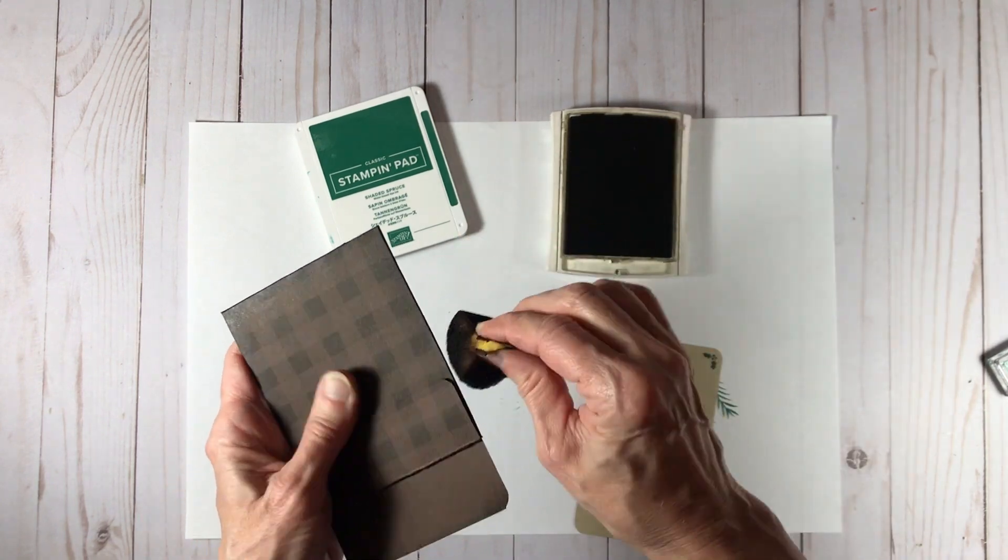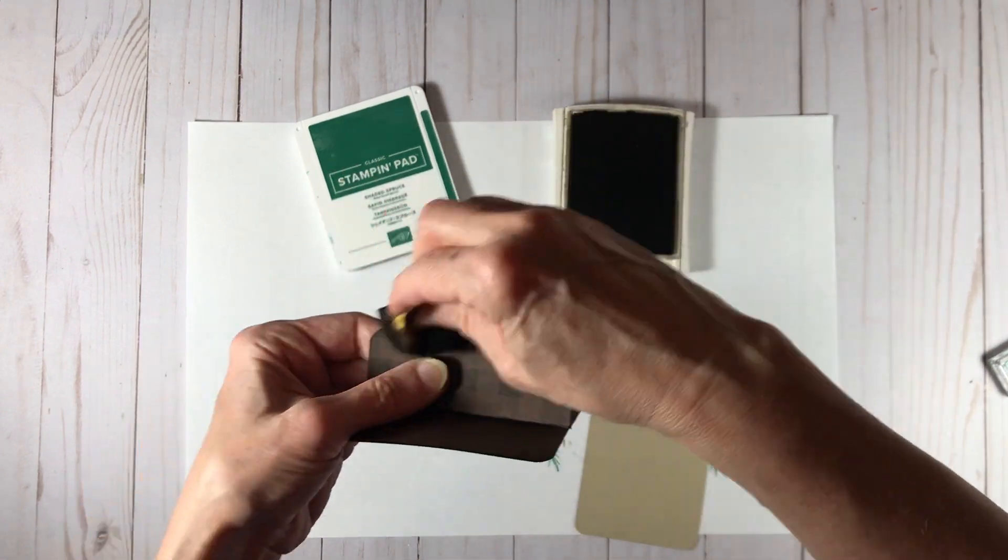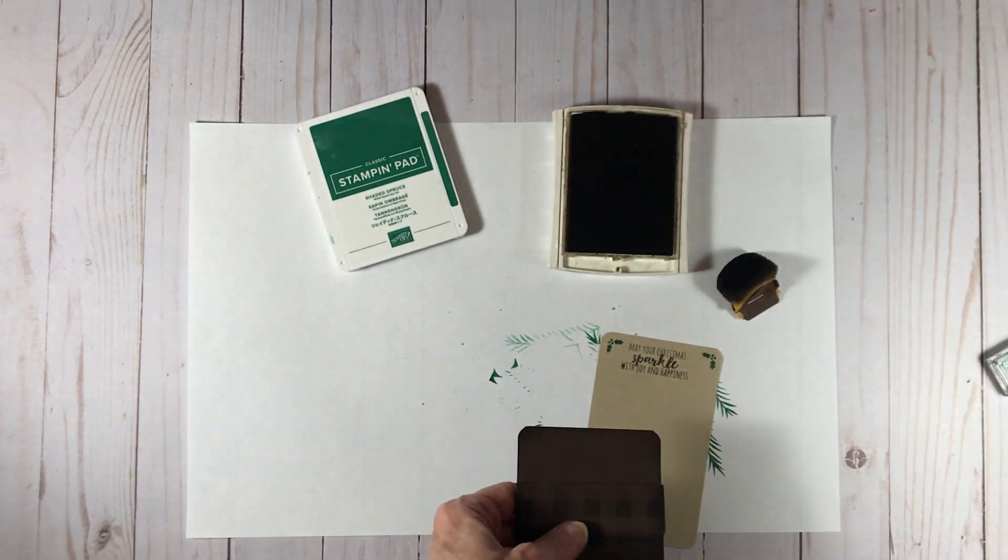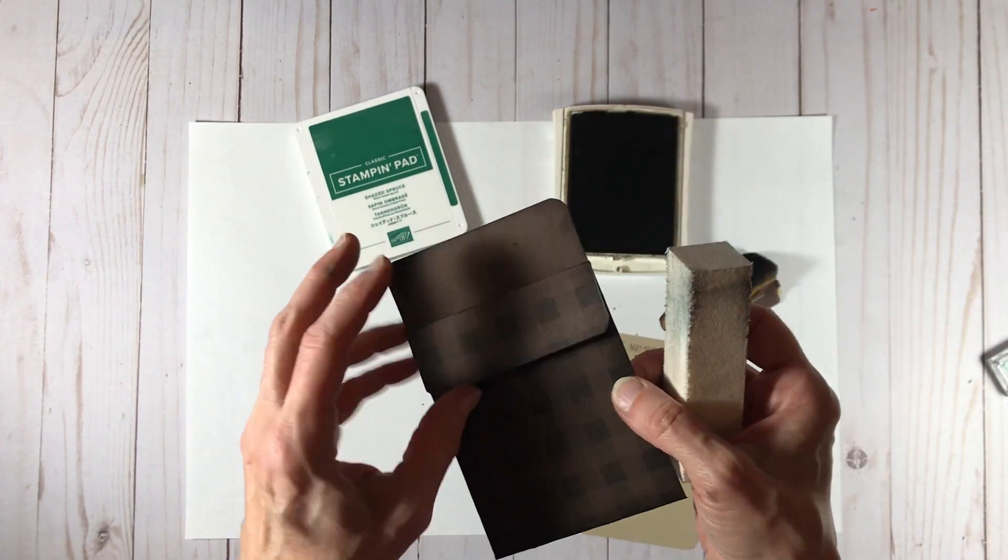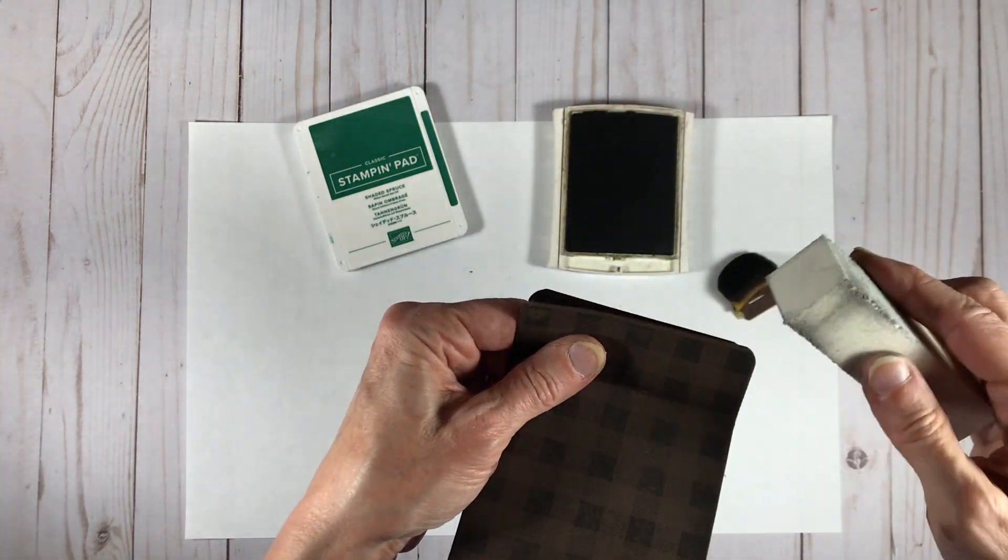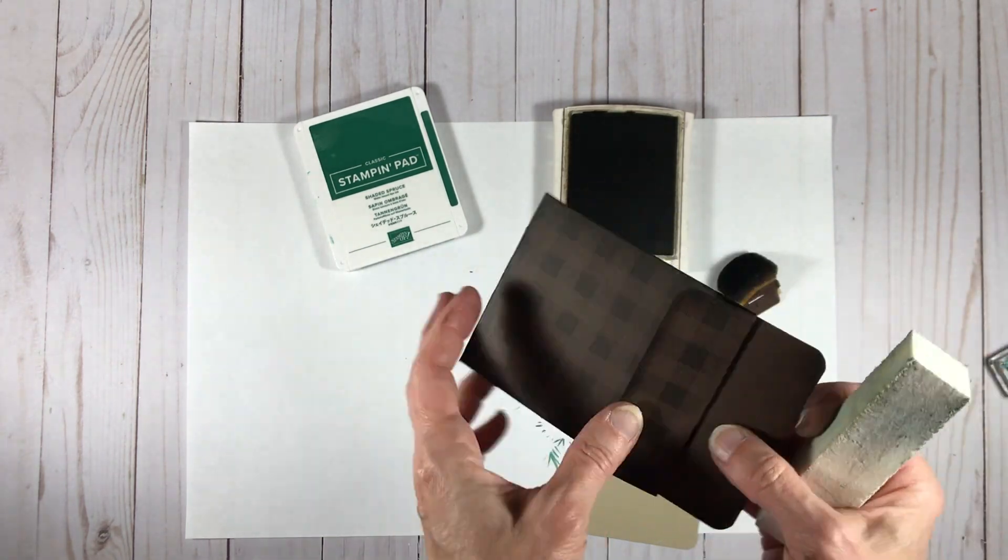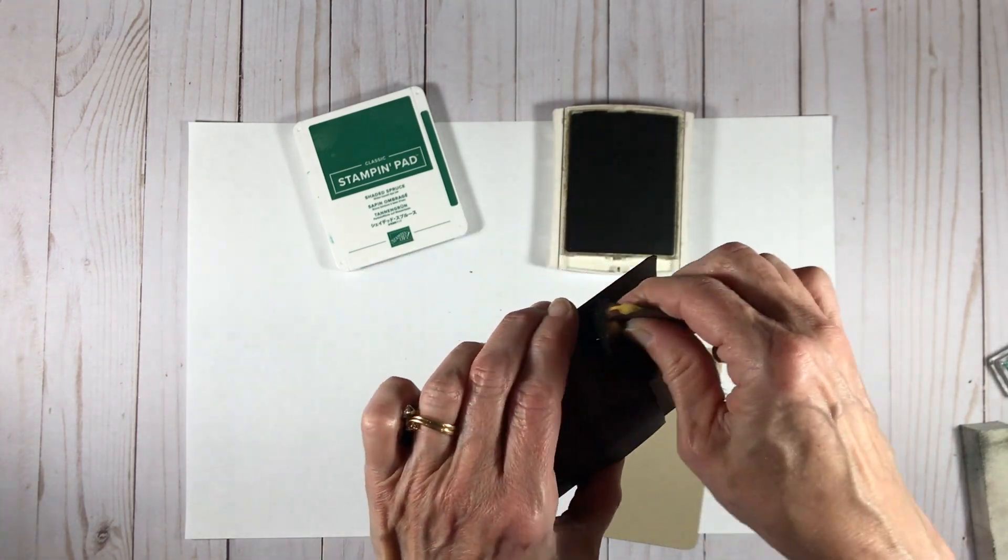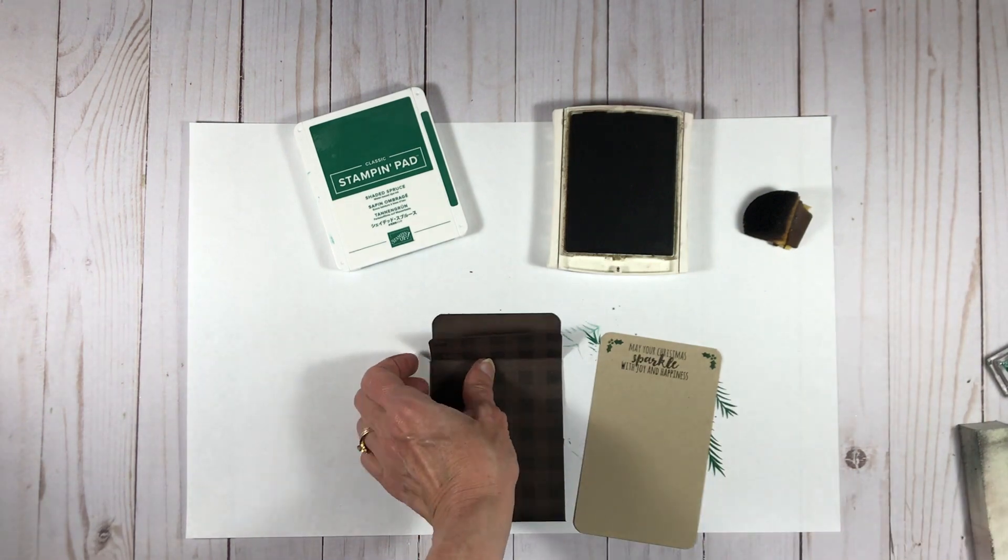So as you can see here now I'm using a sponge with my early espresso ink, and I'm going to sponge every edge that I can get to, all around the outside edges as well as the top edge of the fold. I'm using a sanding block to make sure that all the edges are nice and smooth. Sometimes when you punch corners or use a corner rounder it's not always exactly smooth, so the sanding block comes in handy for that.